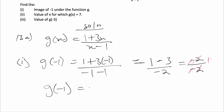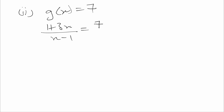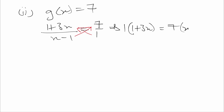So g(-1) = 1. The negatives cancel. Now for part (ii), find the value of x for which g(x) = 7. We set (1 + 3x) / (x - 1) = 7, which is the same as 7/1. So we cross multiply.